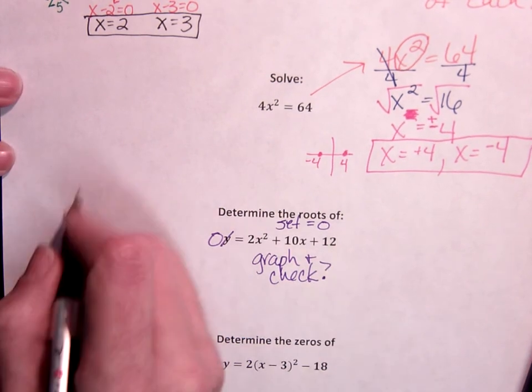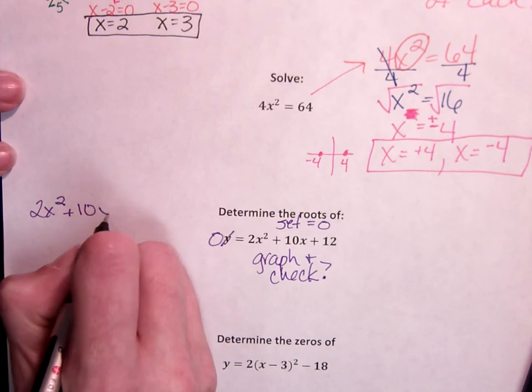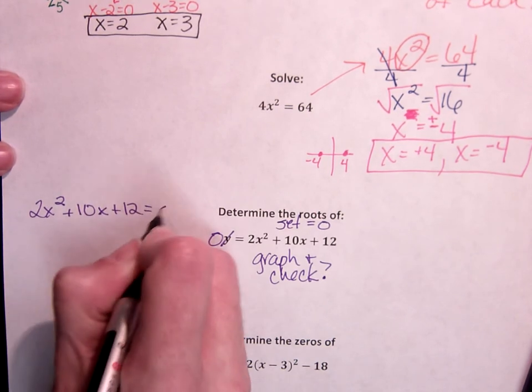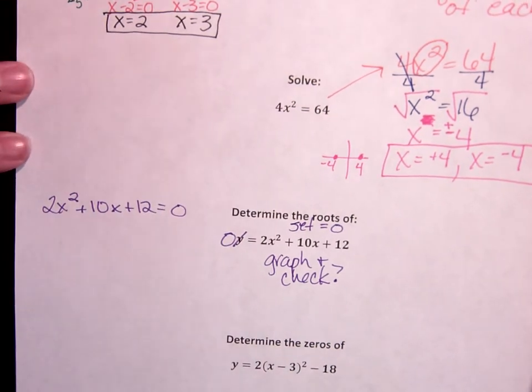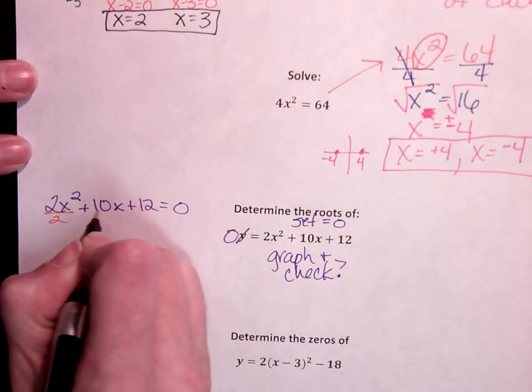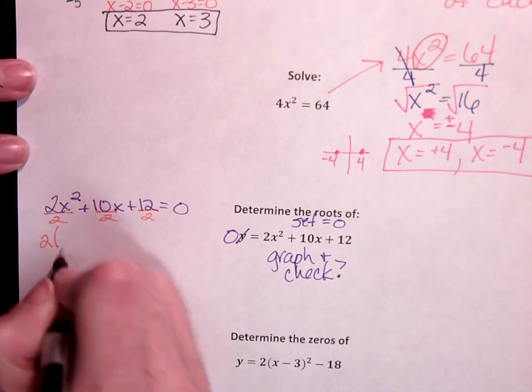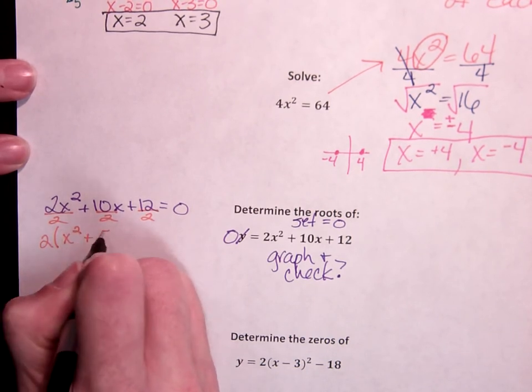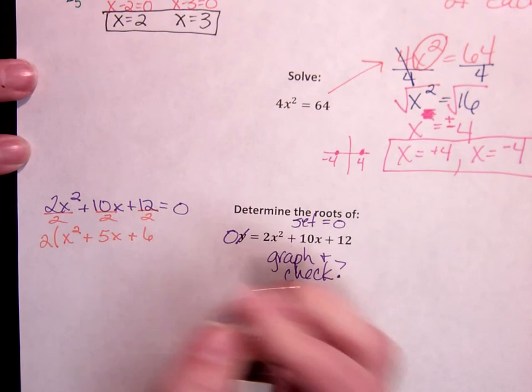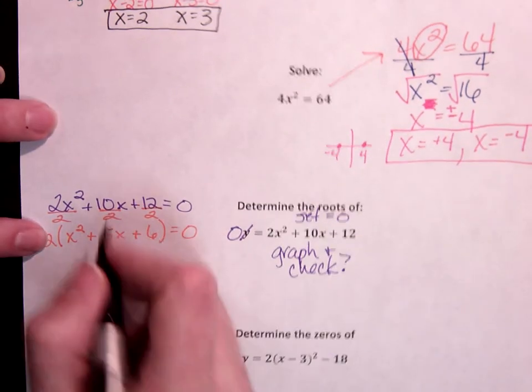So when I say 2x squared plus 10x plus 12 equals 0, there's a greatest common factor. I can divide the 2 out. That leaves 2 times x squared plus 5x plus 6 equal to 0. We just factor what's remaining.